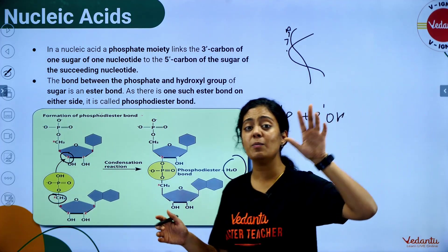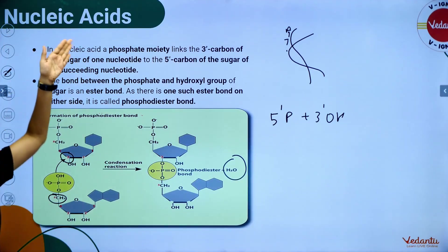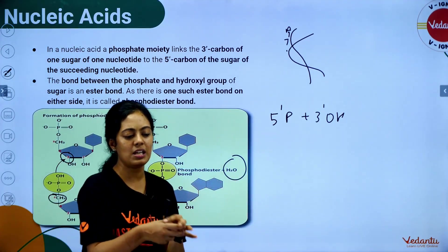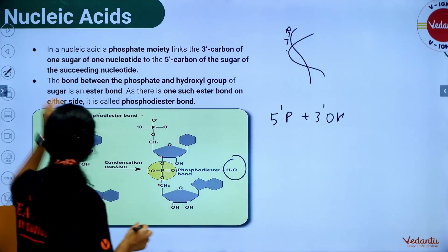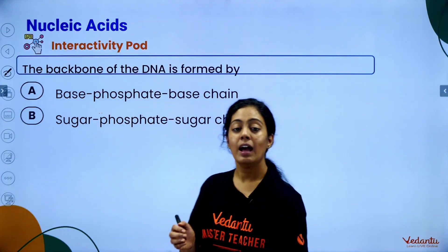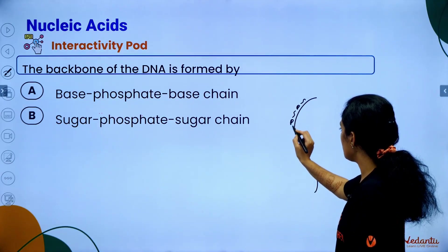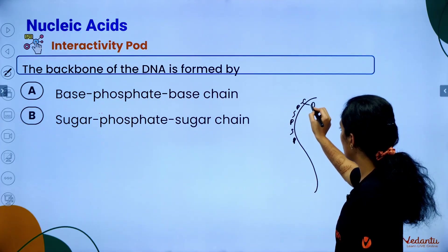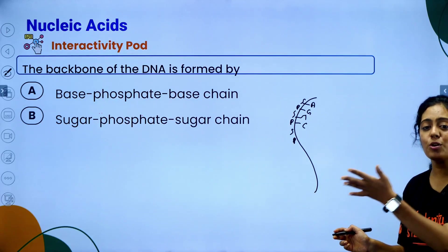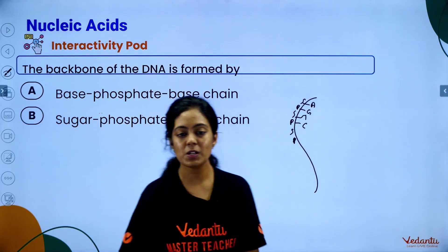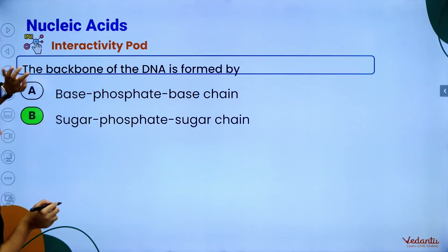The backbone of DNA is made up of alternating sugar and phosphate groups — sugar-phosphate-sugar-phosphate. The nitrogenous bases protrude outward from this backbone. So the backbone of DNA is the sugar-phosphate backbone.